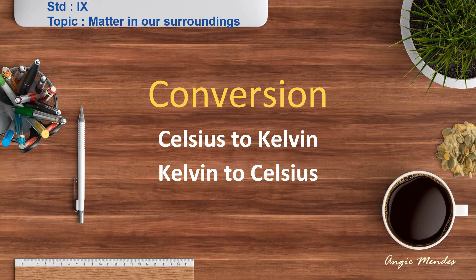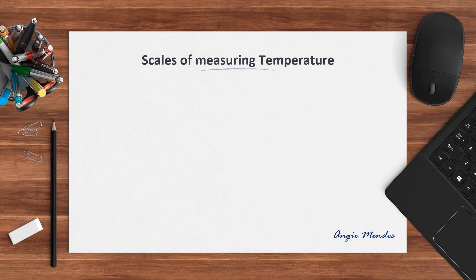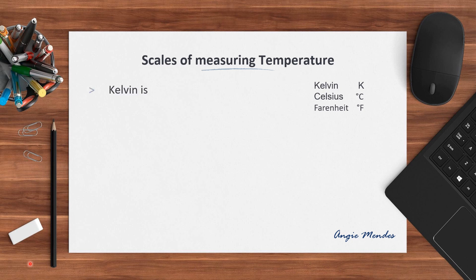Before we begin with conversion, let us look at the different scales of measuring temperature. We have the Kelvin scale which is written as K. We have the Celsius scale denoted as degree Celsius, and we have the Fahrenheit scale denoted as degree Fahrenheit. Kelvin is the SI unit of temperature.